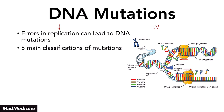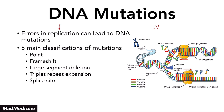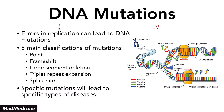There are five main classifications of mutations that you need to know: point mutations, frameshift mutations, large segment deletions, triplet repeat expansion mutations, and splice site mutations. We've discussed all of these in a previous lecture series, so I highly recommend you check those out. Specific mutations can lead to specific types of diseases — a point mutation will have a certain disease associated with it, a frameshift mutation another — but different types of mutations can also lead to one disease.